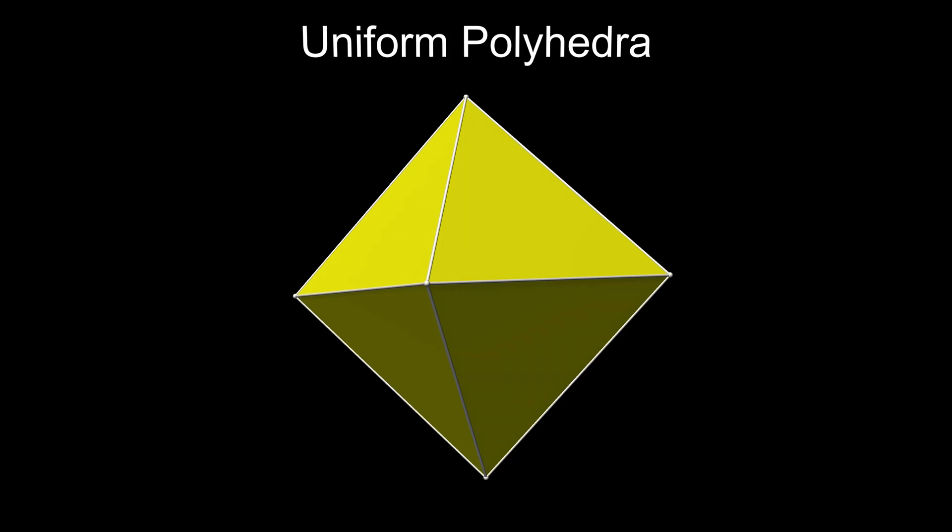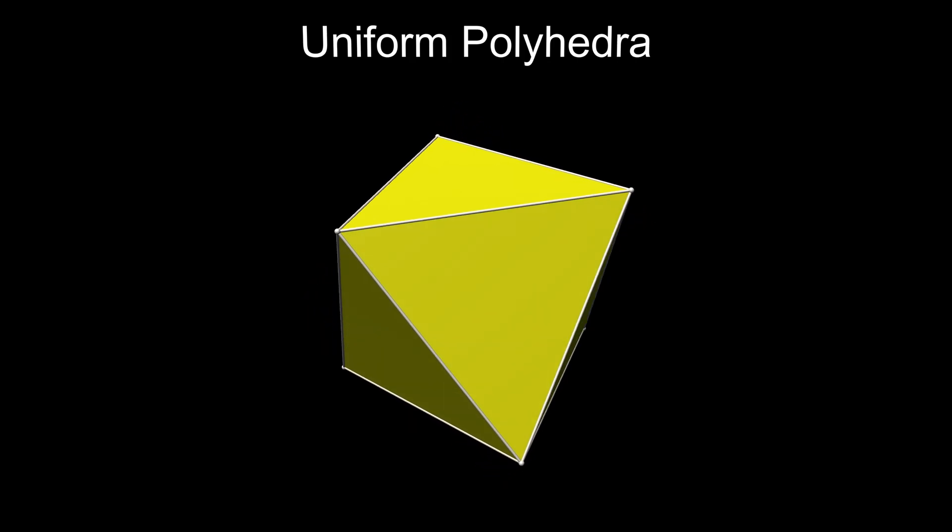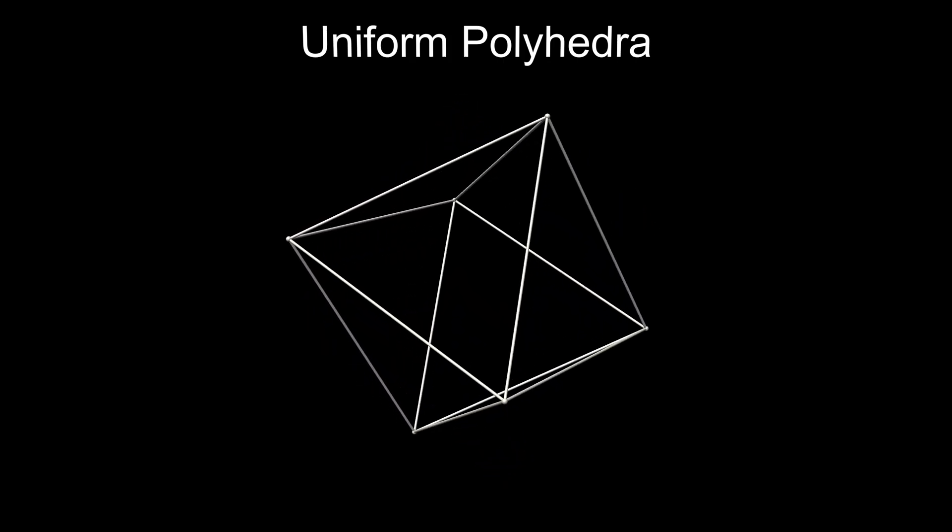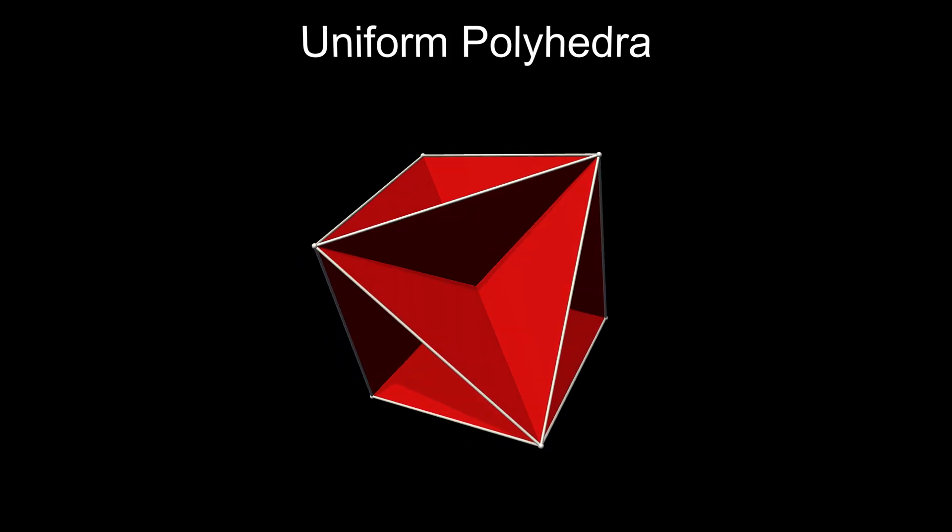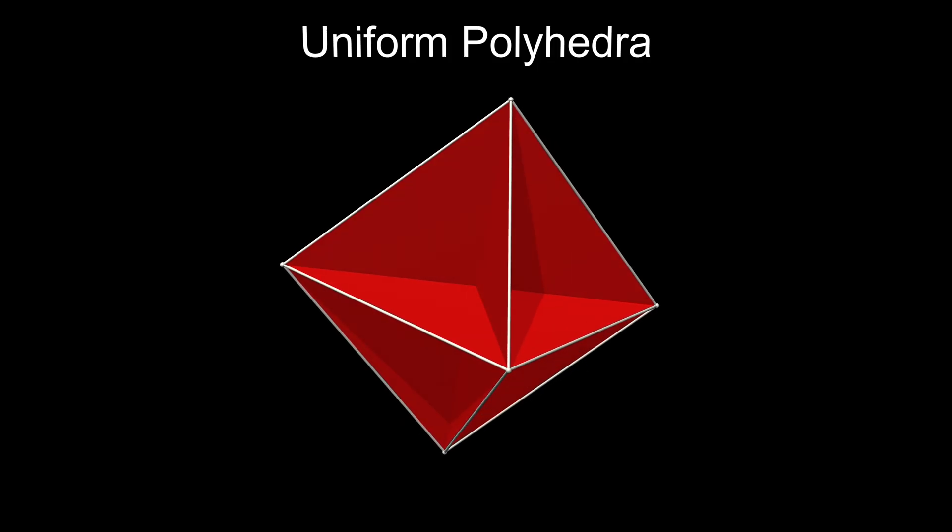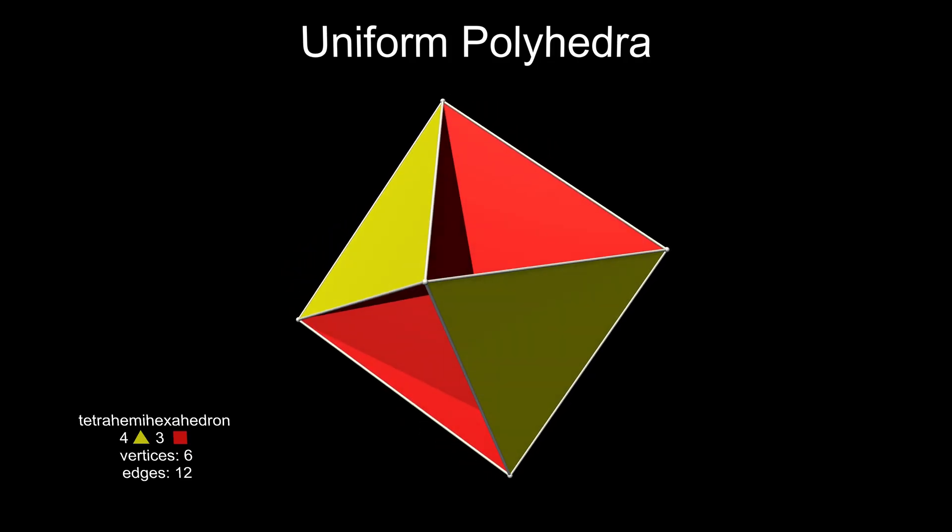If you look at a wireframe octahedron, you can see that the framework can be filled with squares through the centre. If four of the octahedron's faces are restored, it forms a uniform polyhedron, a tetrahemihexahedron.